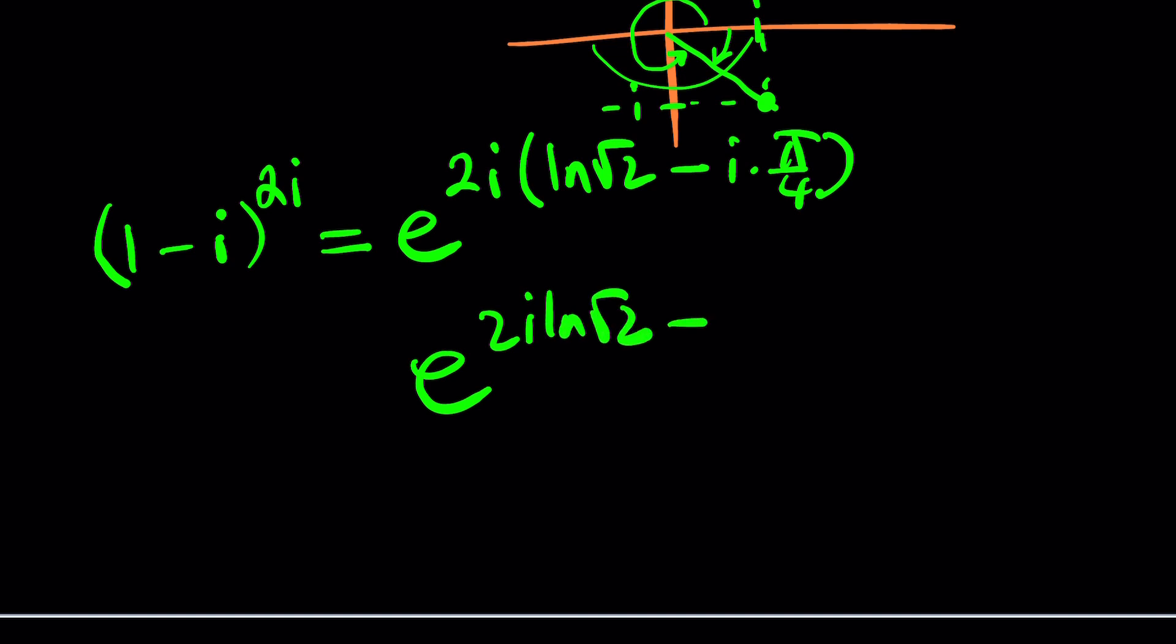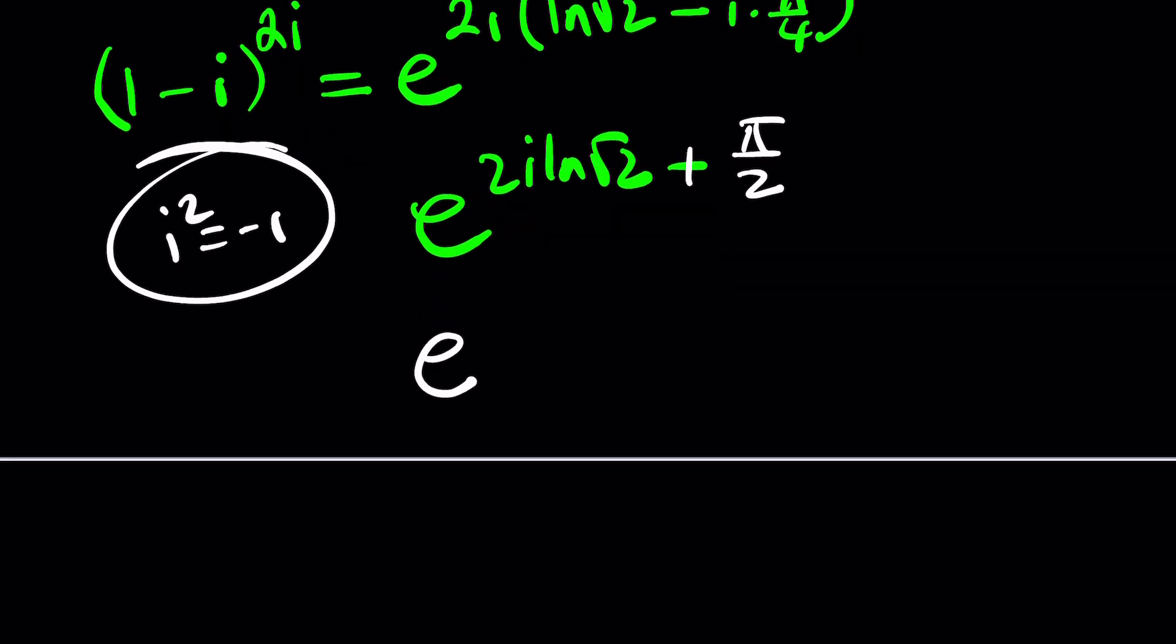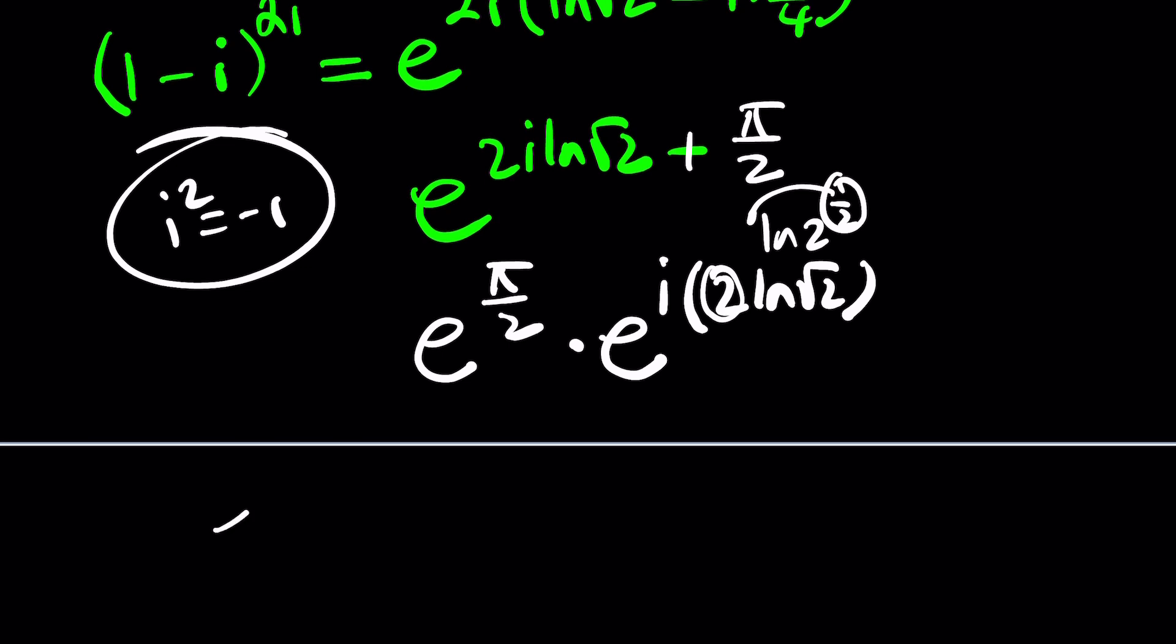So if you distribute, you're going to get e to the power 2i ln root 2 minus, now one thing I forget to say, and I always forget to say that, i squared is negative 1. So i squared is going to give us a negative 1, giving us a plus sign, and 2 times pi over 4 is pi over 2. Awesome. Obviously, you can write this differently. e to the power pi over 2 times e to the power i times 2 ln root 2. By the way, ln root 2 can be simplified, because that's ln 2 to the power 1 half. You can bring the 1 half to the front, multiply by 2, it's going to cancel out. So I think this is going to equal e to the power pi over 2 times e to the power i times ln 2. Awesome. I think this works. I hope so. Great.